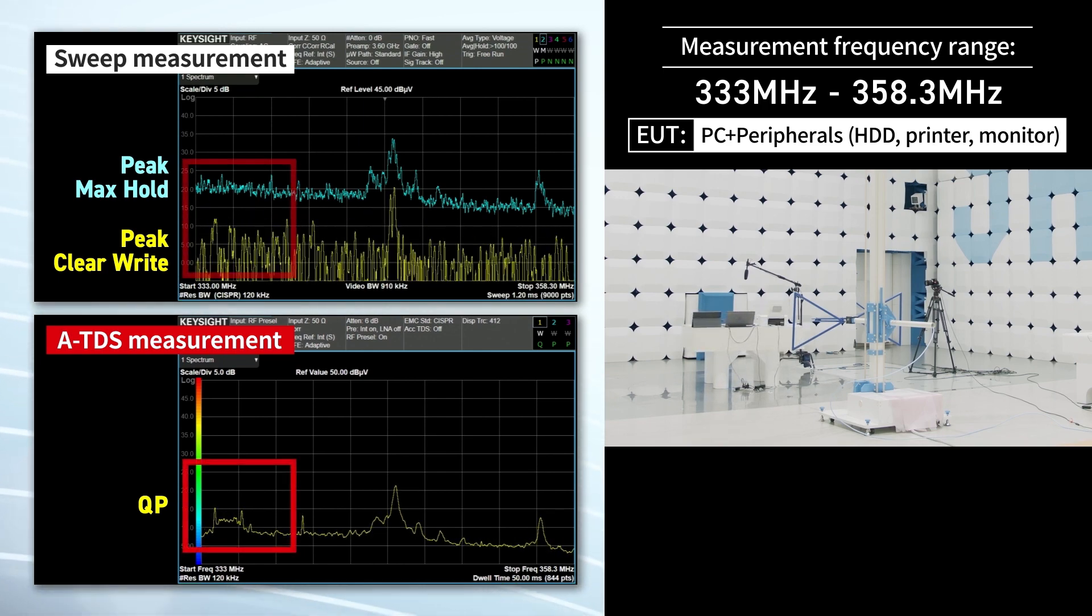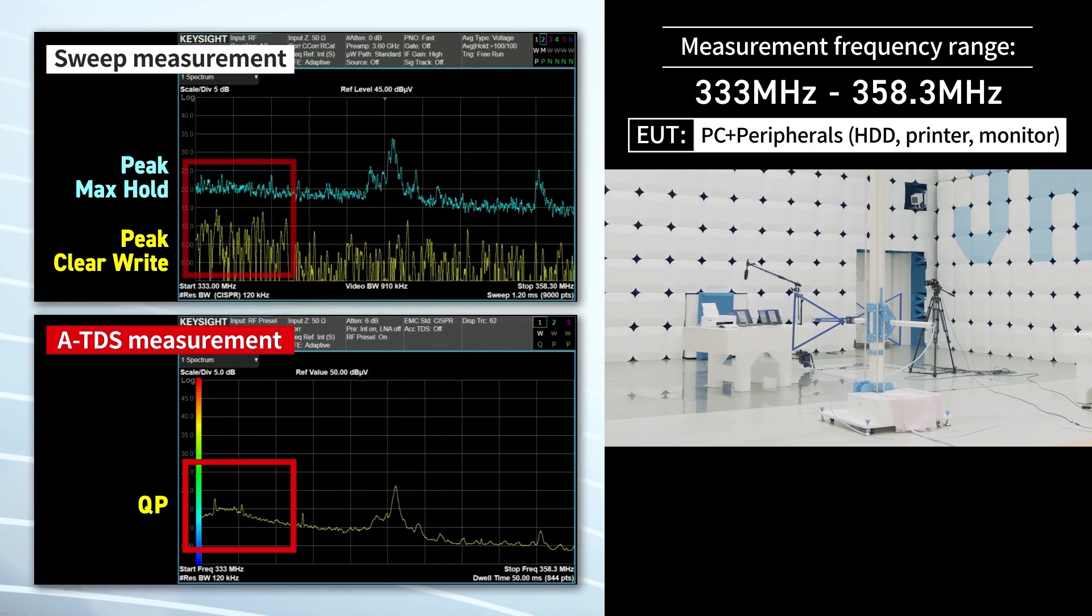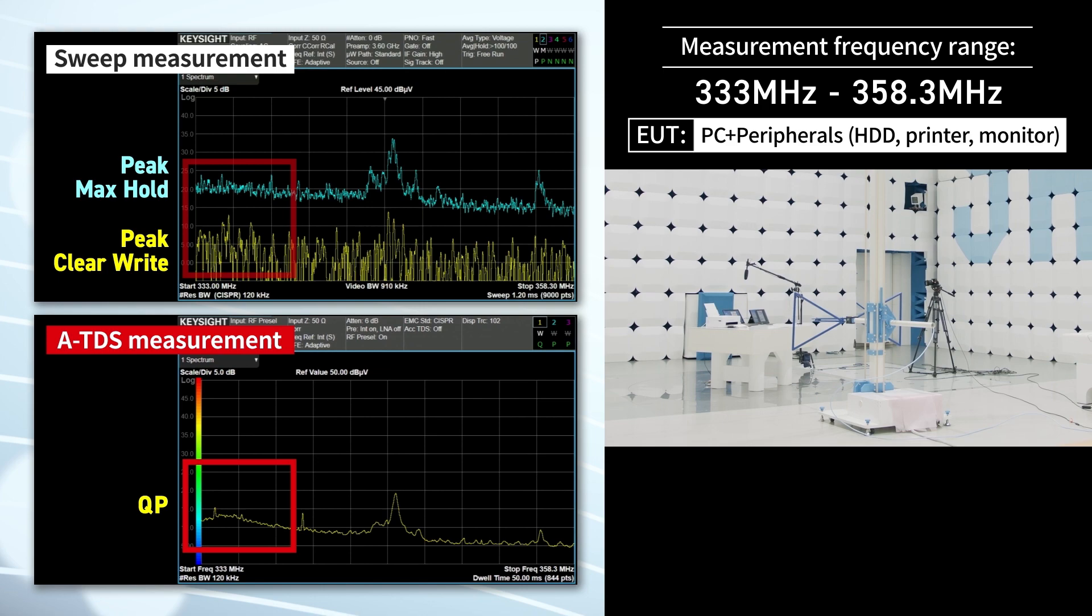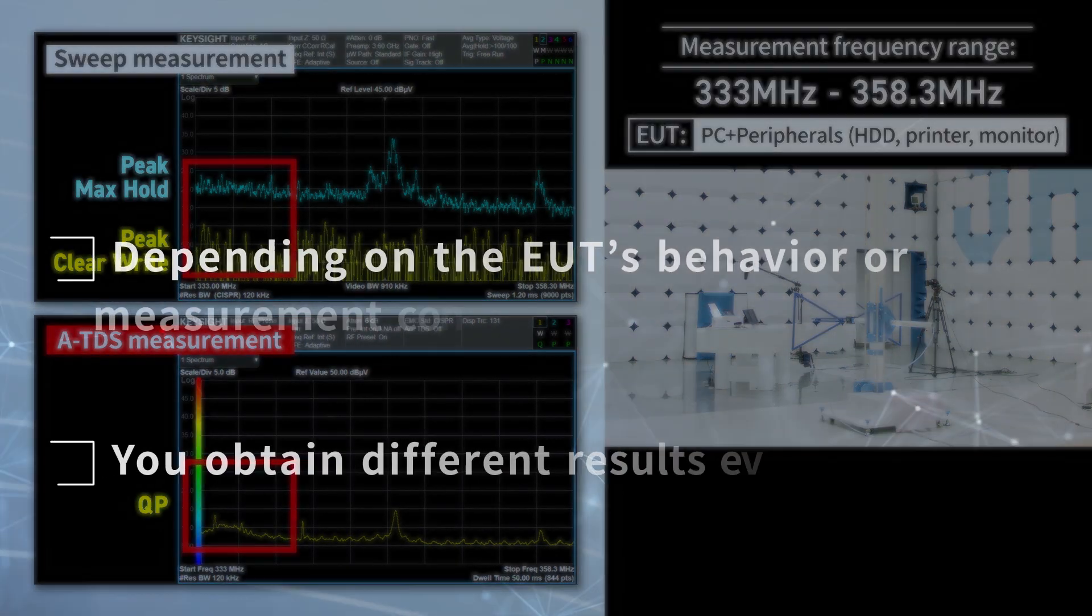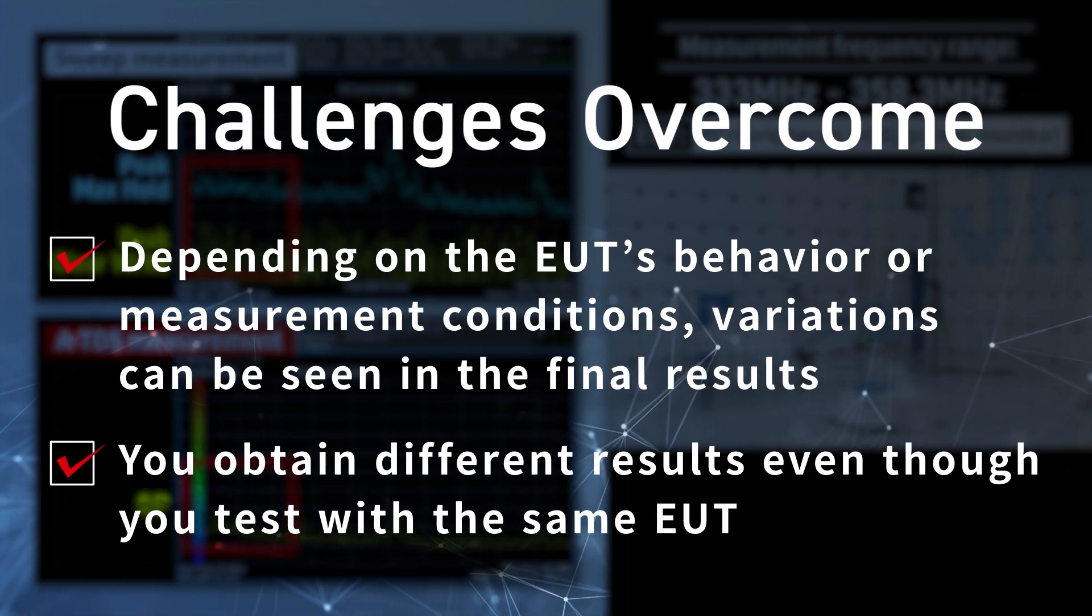With sweep measurements, this behavior is not observed. You may not even be able to see the noise, making measurements impossible. The ATDS avoids missing noise, ensuring that you obtain reliable results.